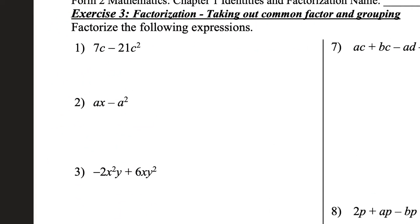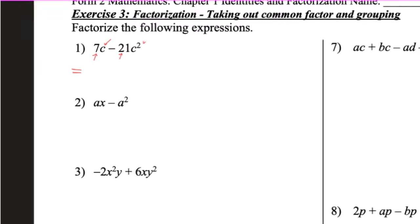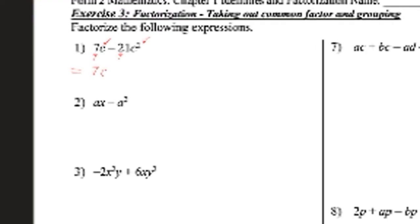So for this one, this is taking out the common factor and grouping. You can see that for the first one, both of them contain the number 7 and the factor 7, and then the second one will be C. So we take out 7C here.